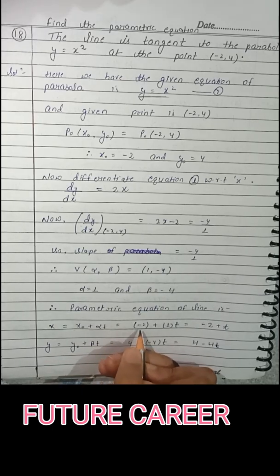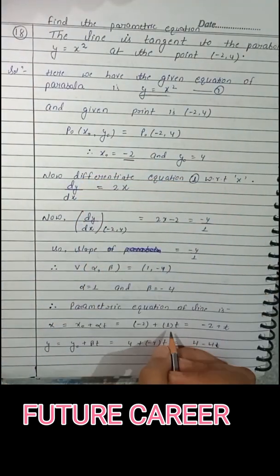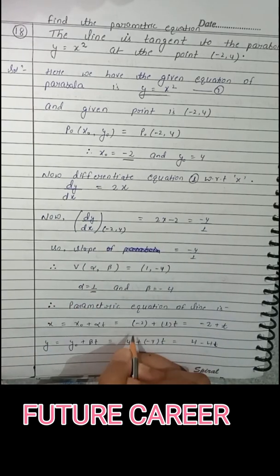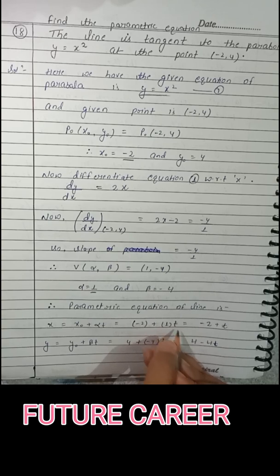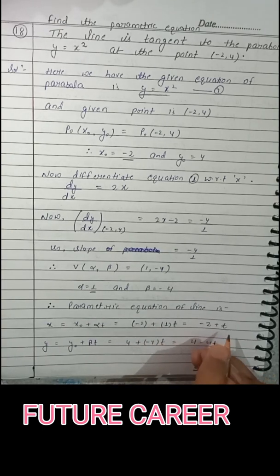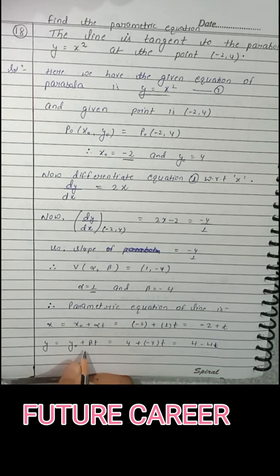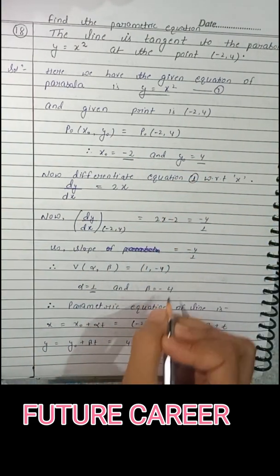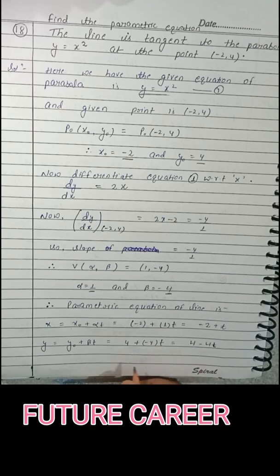and plus αt, so α equals 1, so -2 plus 1·t which equals -2 plus t. And y equals y₀ plus βt. Here y₀ equals 4 and β equals -4, so y equals 4 minus 4t.